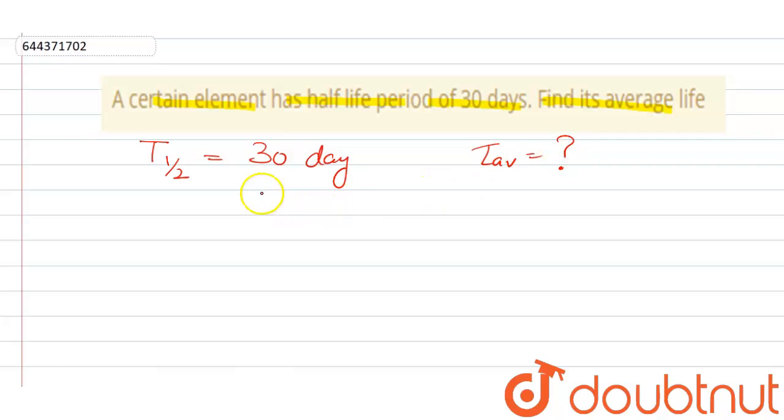Now there is a relation between average life and half-life. Average life is 1.44 multiplied by half-life. So that means...